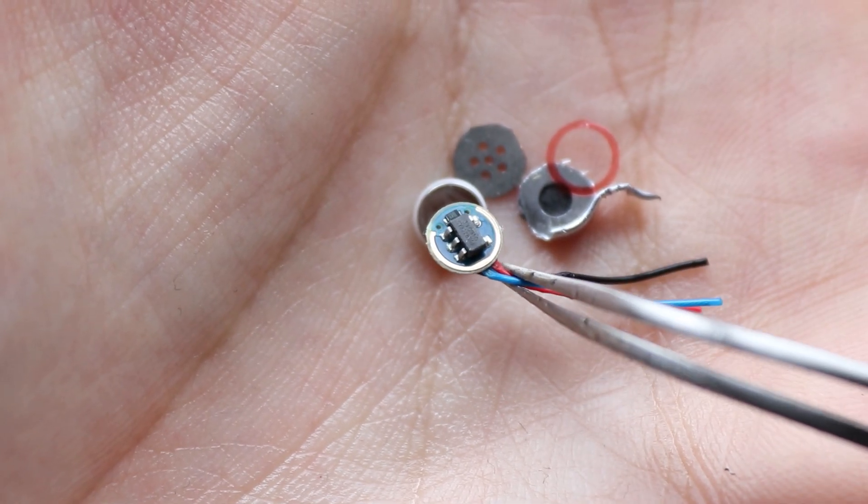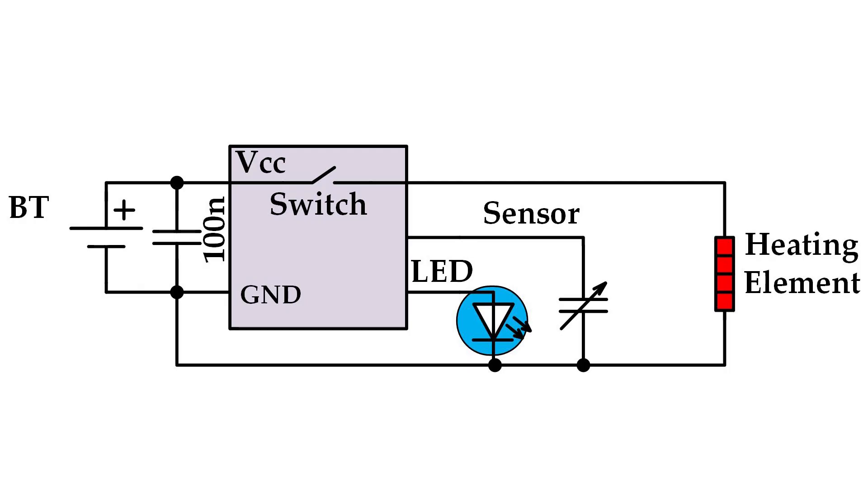So eventually the simplified circuit of the device can look like this: battery, integrated circuit, LED, sensor and heater. So when the IC detects that capacitance has changed, it closes the switch inside it, allowing current to flow from the battery to the heating element. And it indicates that heating is on by the LED.